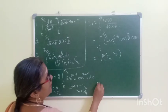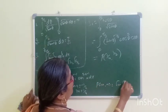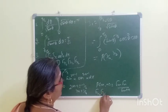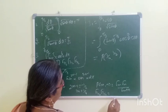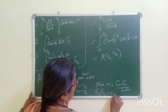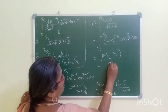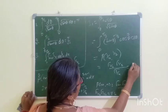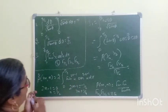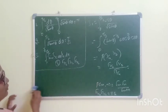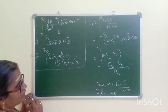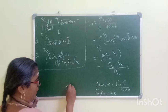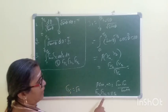Beta(m, n) equal to Γ(m)Γ(n) / Γ(m+n). This is the result. Γ(1/4) into Γ(3/4) value, by root 2. Equal to Γ(1/4), Γ(1/2) by Γ(1/4 + 1/2). 1/4 equal to Γ(1/4), that one will be simplified. Γ(1/4), Γ(3/4), Γ(1/2), Γ(1/2), Γ(1/2), Γ(3/4).